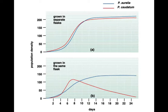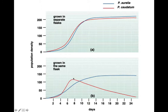When both Paramecium species were placed in the same flask, the better-adapted species showed biotic potential and leveled off at carrying capacity, while the less-competitive species showed a J-shaped curve that declined under environmental resistance until that population died off completely.